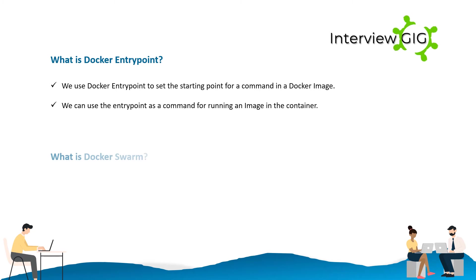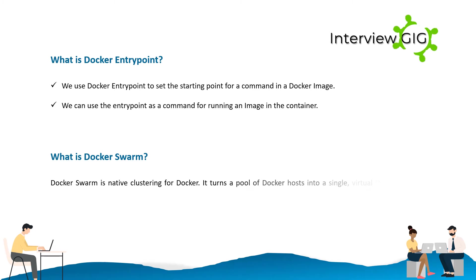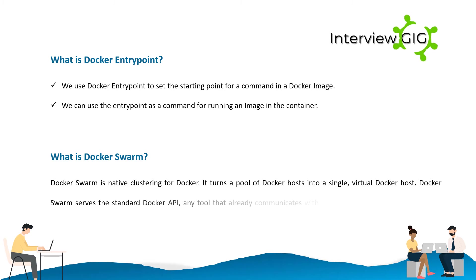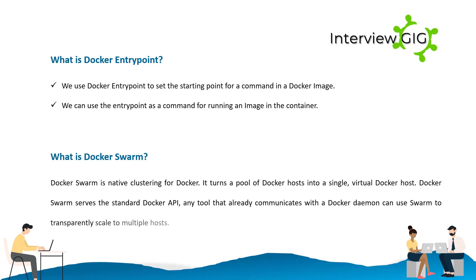What is Docker Swarm? Docker Swarm is native clustering for Docker. It turns a pool of Docker hosts into a single virtual Docker host. Docker Swarm serves the standard Docker API, so any tool that already communicates with a Docker daemon can use Swarm to transparently scale to multiple hosts.